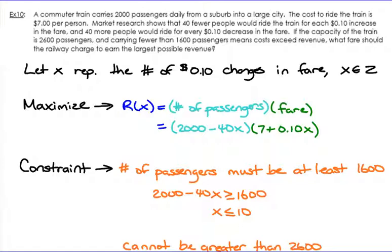Example number 10: A commuter train carries 2,000 passengers daily from a suburb into a large city. The cost to ride the train is $7 per person. Market research shows that 40 fewer people would ride the train for each dime increase to the fare. Obviously that makes sense - if you jack up the price, a dime increase results in 40 fewer people riding.